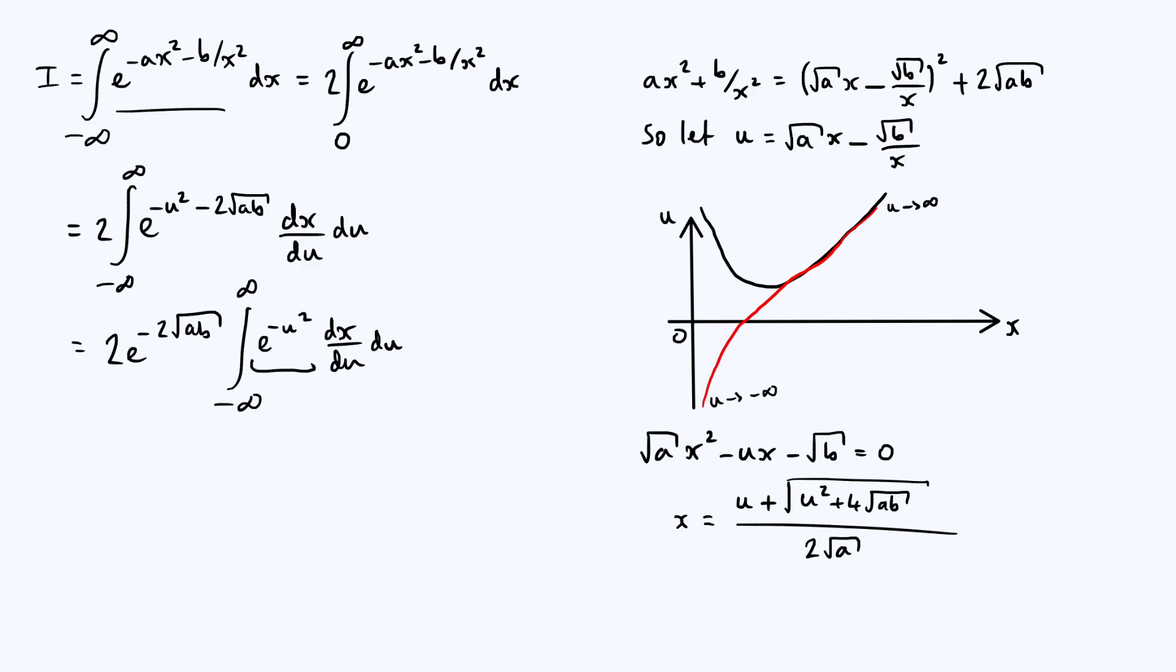Now notice that e to the minus u squared, again, that is an even function of u. dx by du in general, this is just some function, it's going to have an even part and an odd part. Now because we're integrating over all values of u, any odd part of dx by du is going to integrate out to zero when we multiply it by e to the minus u squared and integrate over all values, right? That just comes from symmetry, and so only the even part of dx by du is actually going to contribute a non-zero amount to our integral.